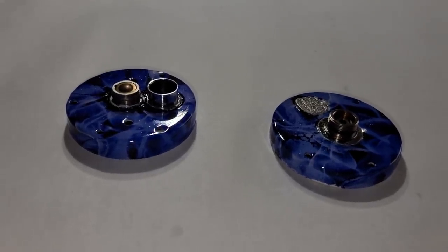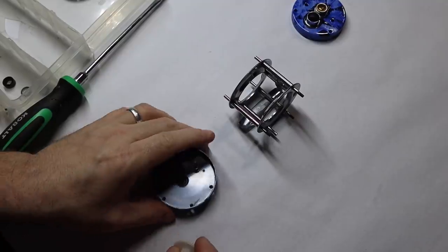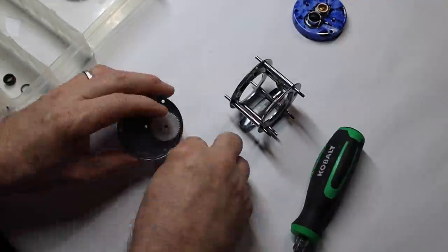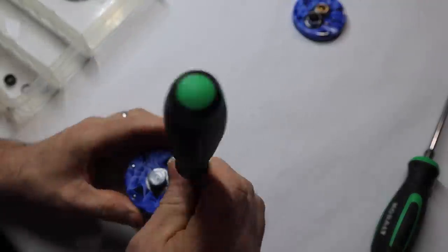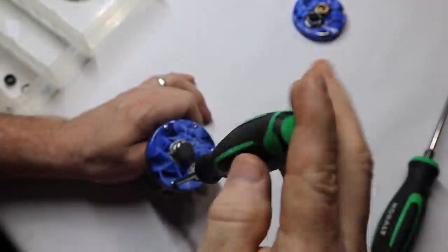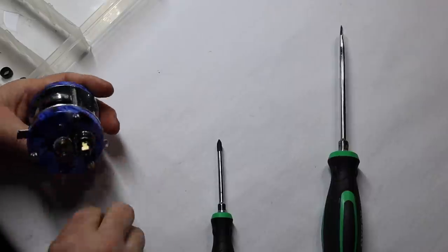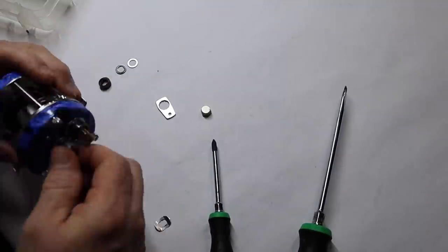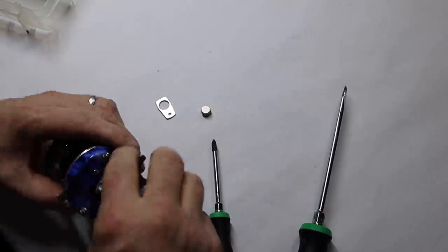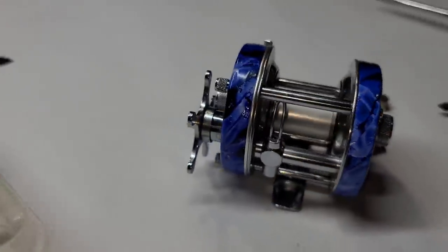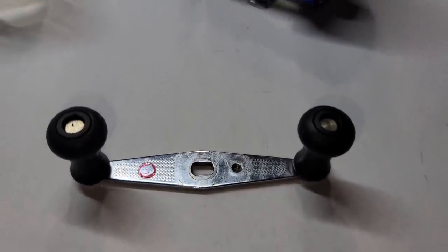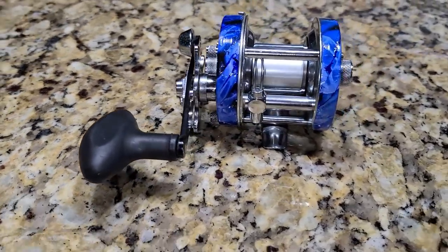Now I just got to put this thing back together because as you can see it's a mess. Okay, so I pretty much got this thing put back together. But I'm not going to use the old handle, I'm going to put a new handle on it. Well, that reel turned out awesome. It looks beautiful. I really do like the way it turned out.